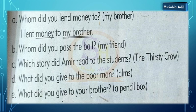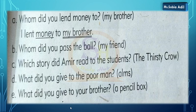What did you give to your brother? A pencil box — the answer is: I gave a pencil box to my brother. Pencil box is the direct object — aapne isko ek dafa underline karna hai. My brother is indirect — aapne isko double time underline karna hai. I gave a pencil box to my brother — pencil box is direct and my brother is indirect.